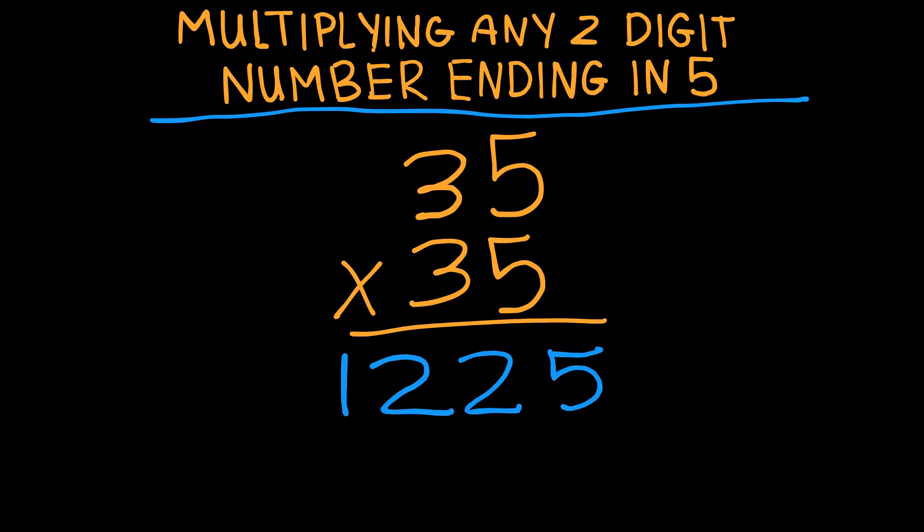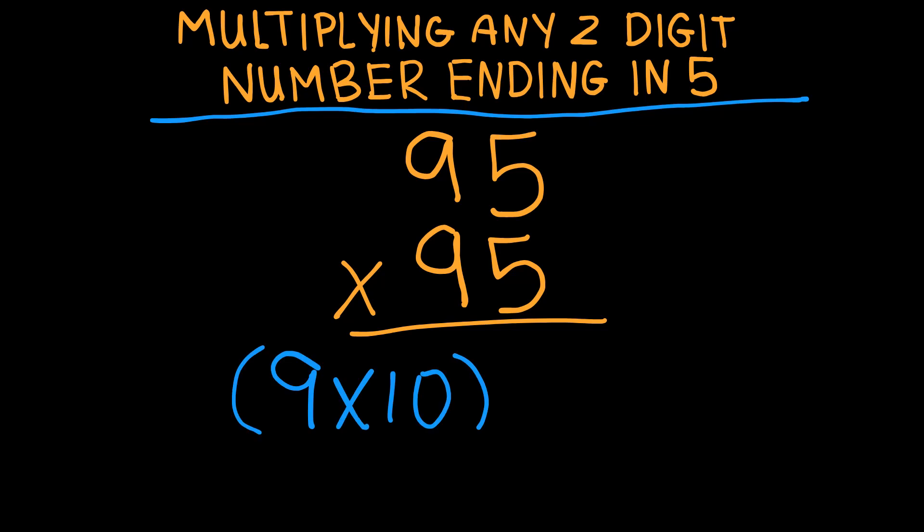Are you ready to try the next problem? Try it on brain. I will count to 5 and let's see if you can solve it. 1, 2, 3, 4, 5. Okay, so now you know the answer. I'll just break it down. What we're doing is 9 times 10, which will be 90, and then we simply add 25. We have 9025 as our final answer.